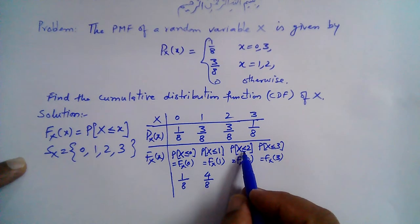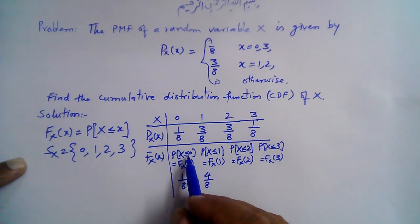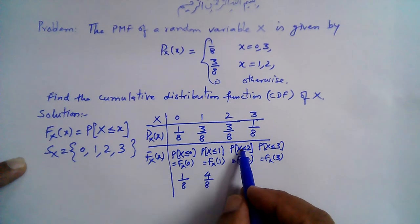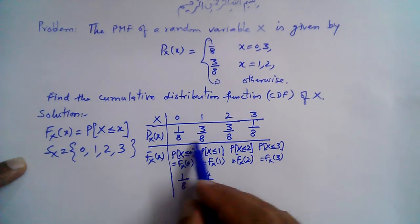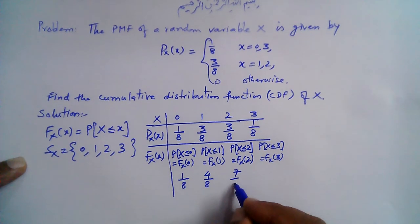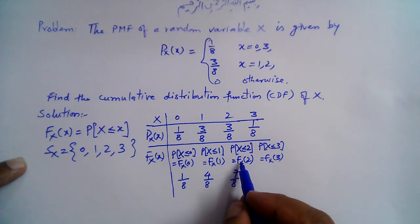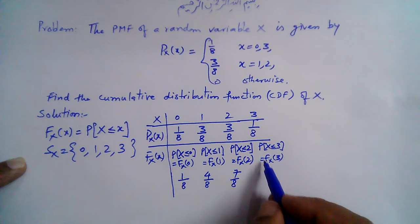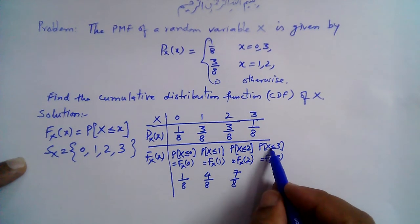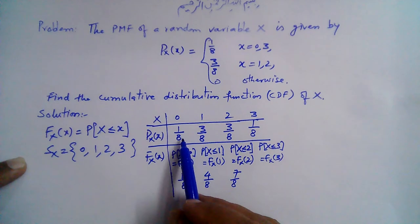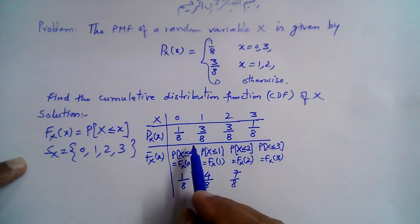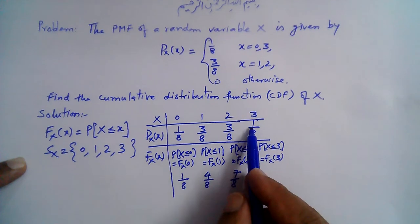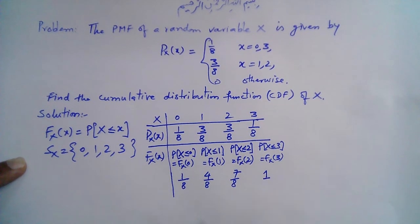At x = 2: P(X ≤ 2) = P(X=0) + P(X=1) + P(X=2) = 1 + 3 + 3 = 7 over 8. At x = 3: P(X ≤ 3) = P(X=0) + P(X=1) + P(X=2) + P(X=3) = 1 + 3 + 3 + 1 = 8/8 = 1.